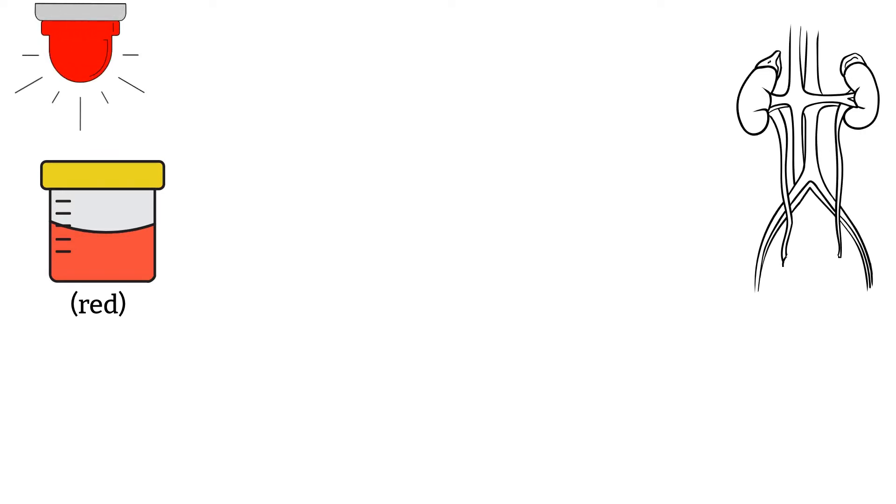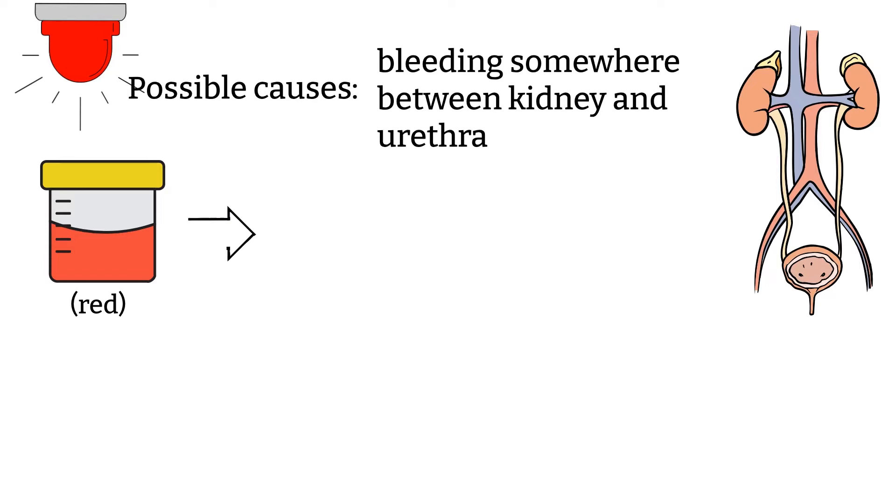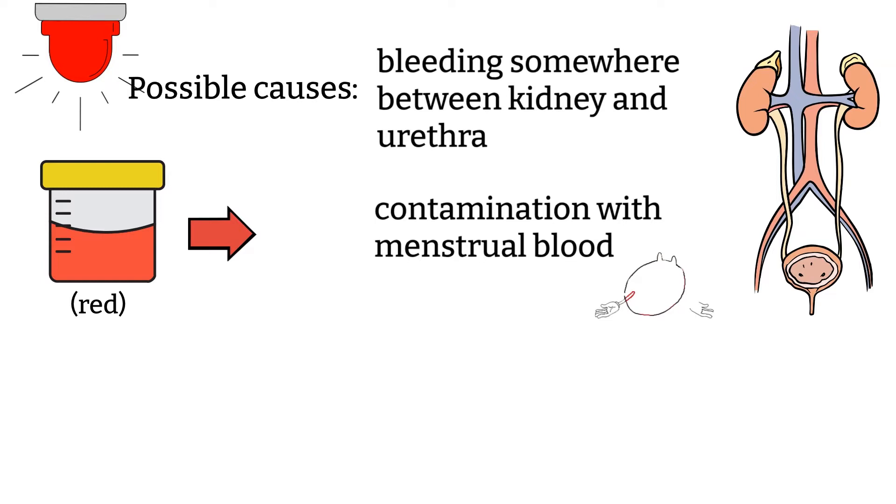Red color urine could mean many things. I understand that it is alarming when seeing red urine because it could mean bleeding somewhere in the urinary tract. The bleeding can come from anywhere from kidney to urethra. However, red urine can also come from contaminations. An example is contamination with menstrual blood. This is why it is important to be careful during the collection process as well as choosing the right method to obtain the specimen.